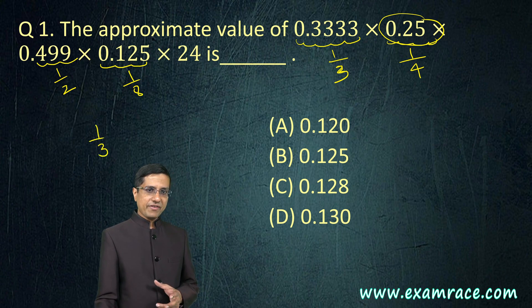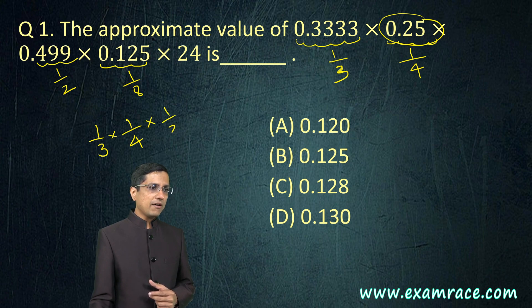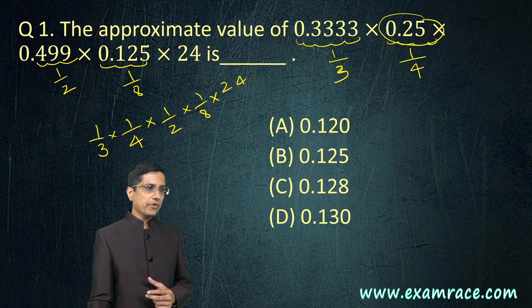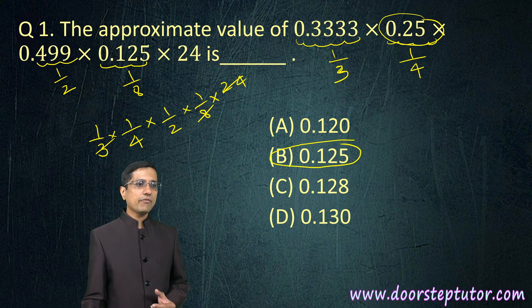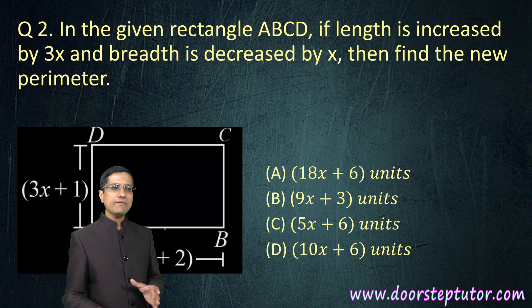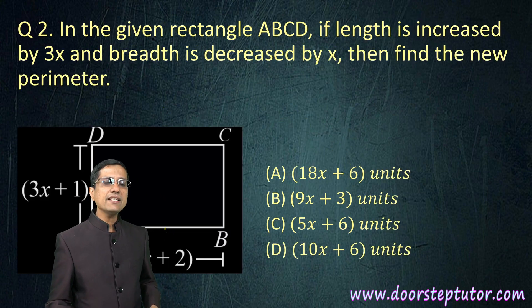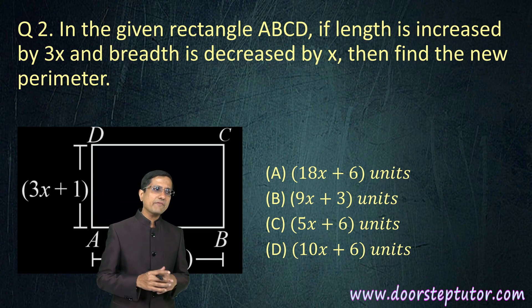We can write this entire fraction as 1 by 3 into 1 by 4 into half into 1 by 8 into 24. These 3, 8 and 24 they cancel and we are left with 1 by 8. 1 by 8 as we saw earlier is 0.125. Very simple if you go about it in a systematic fashion.